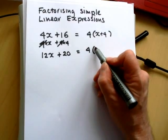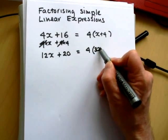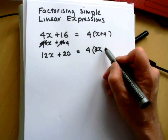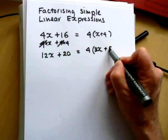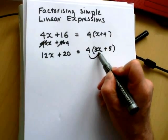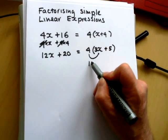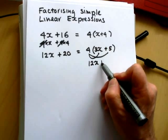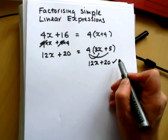Now 4 goes into 12 three times, the x goes next to it. 4 goes into 20 five times. So that's what I think it is when I factorized it. But I can check: 4 times 3x is 12x, and 4 times 5 is 20. So I know I've done it correctly.